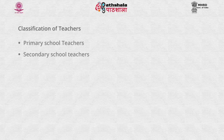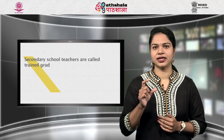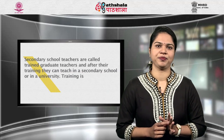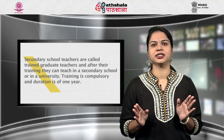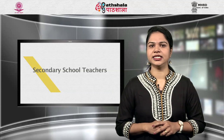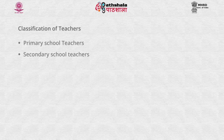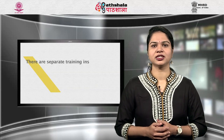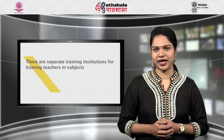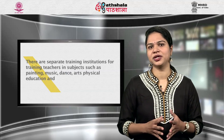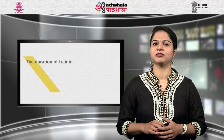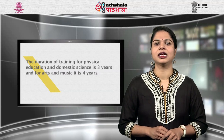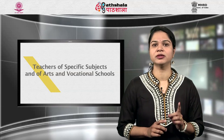The next category is secondary school teachers, who are called trained graduate teachers. After their training, they can teach in a secondary school or in a university. Training is compulsory and the duration is 1 year. Training is usually given by teacher training departments of universities. The third category is teachers of specific subjects and of arts and vocational schools. There are separate training institutions for subjects such as painting, music, dance, arts, physical education and domestic science. The duration of training for physical education and domestic science is 3 years, and for arts and music it is 4 years. The general certificate of education is the minimum qualification for admission.